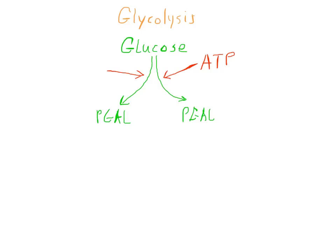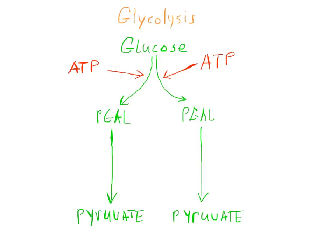After more biochemical reactions, the p-gal is converted into a molecule called pyruvate. So that would happen twice because we have two molecules of p-gal — pyruvate. This molecule has lots of energy in it and will be used later, as you'll see.